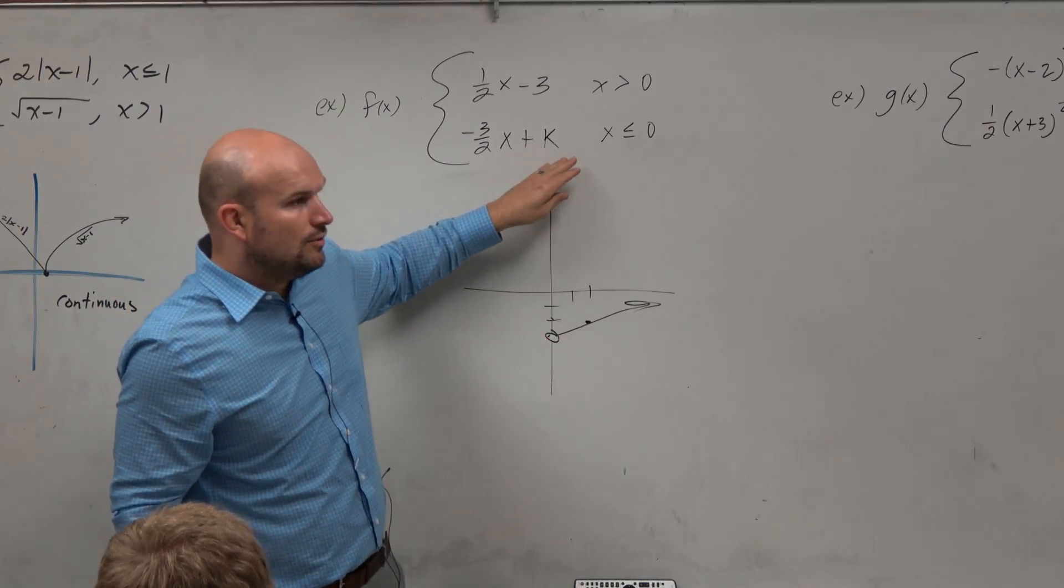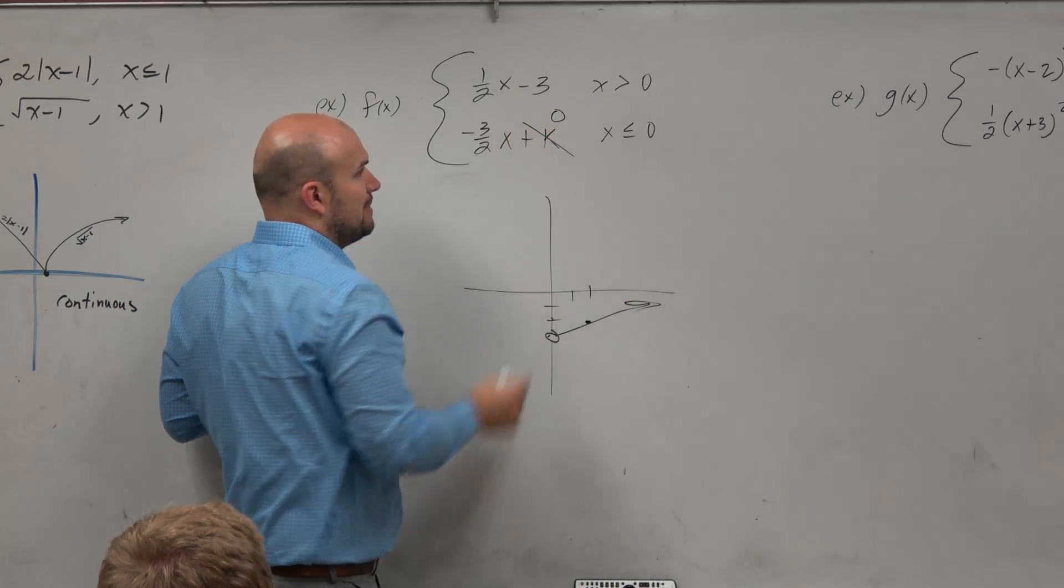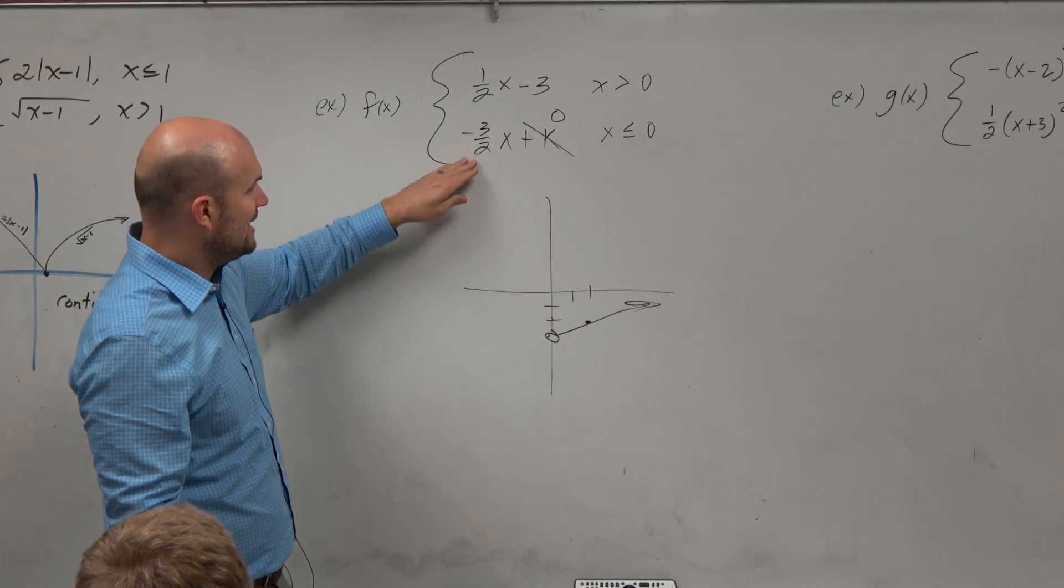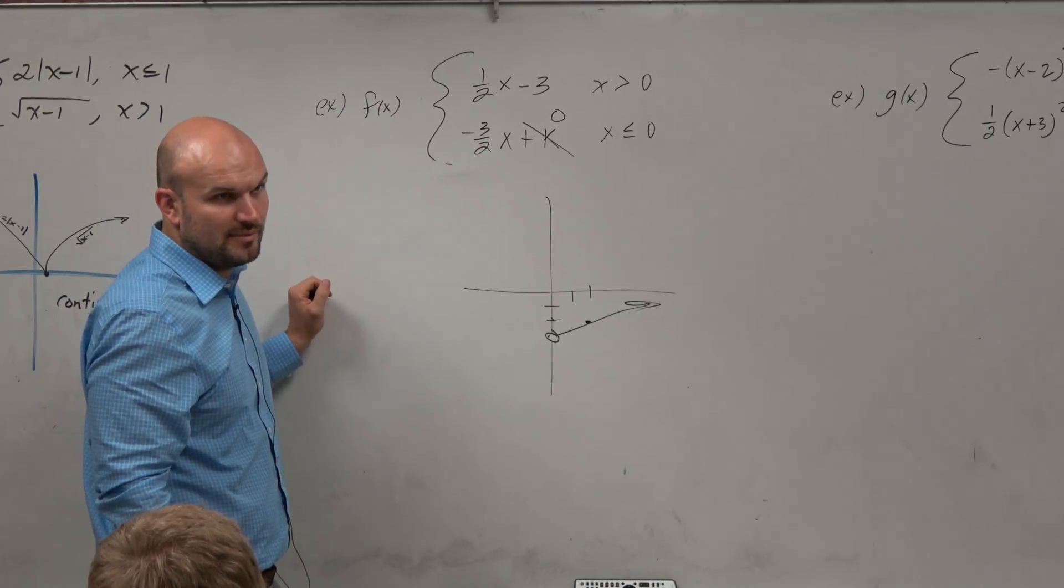Now, I don't know how to graph this when I don't know what k is. So let's give k something easy. How about 0? Can I graph y equals, if I can remember this, can I graph negative 3 halves x from there?